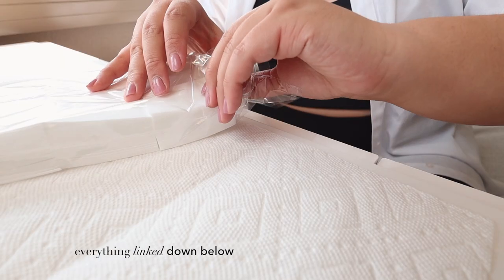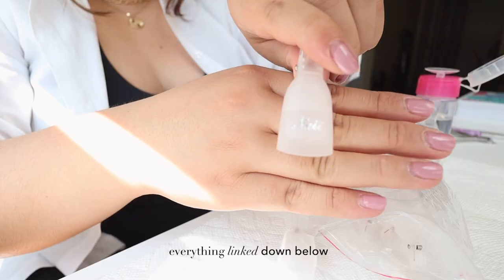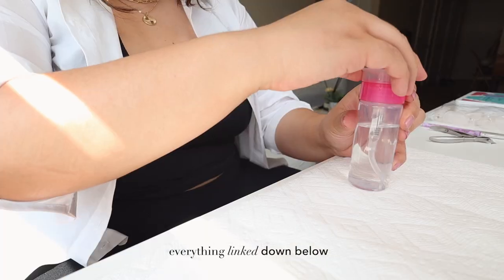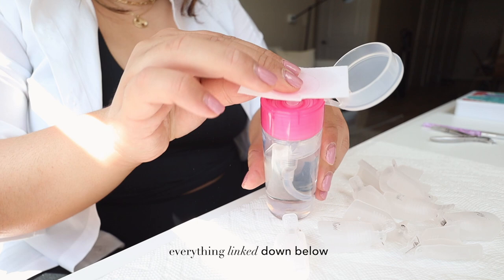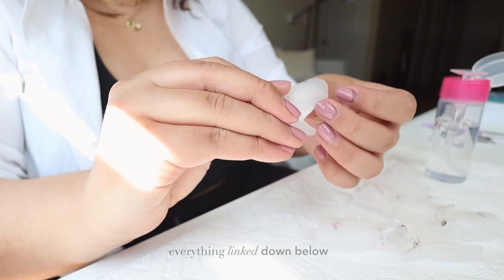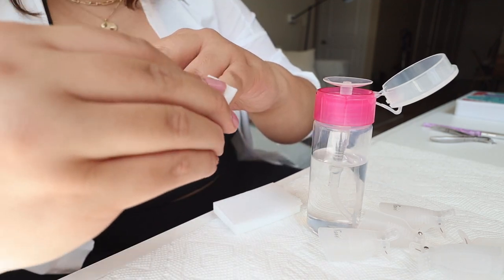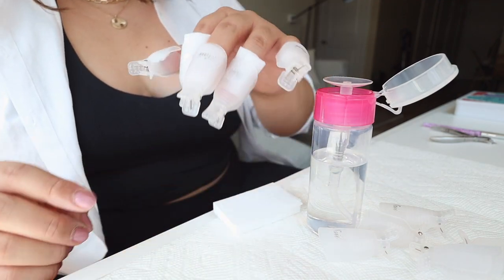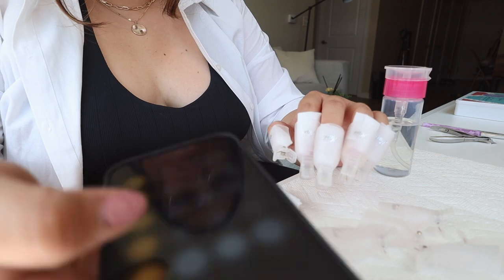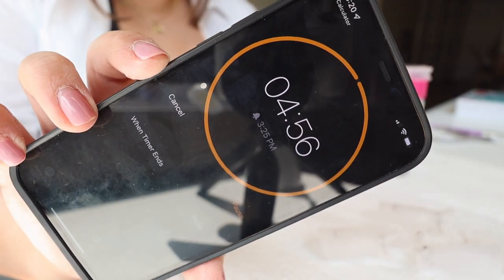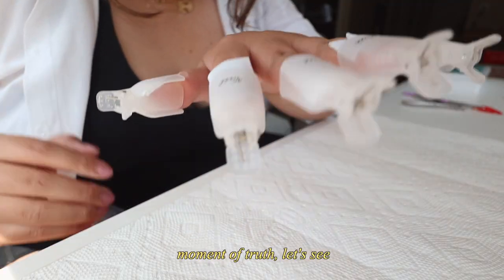First, I wanted to prepare all of the materials. I got all of these things off of Amazon. I needed to soak off the gel polish that I already had on my nails. So I used these lint-free towels that I got from Amazon and these nail clips. And I just set a timer for five minutes to let them soak. Moments of truth. Let's see.